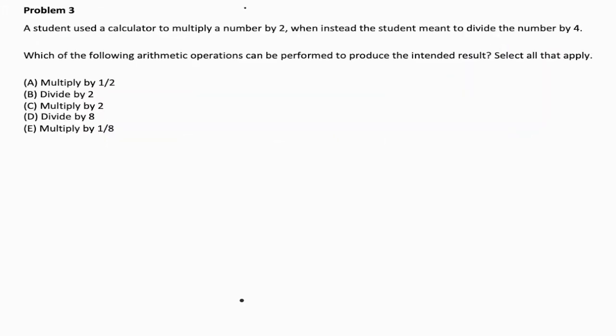Okay, so for our third problem here, we have a student used a calculator to multiply a number by 2 when instead the student meant to divide the number by 4. Oh no! Which of the following arithmetic operations can be performed to produce the intended result? Select all that apply. Okay, so it may be more than one. This kind of problem, I think it's much easier to think in terms of a real number instead of being purely theoretical. So let's say we start with the number 4.